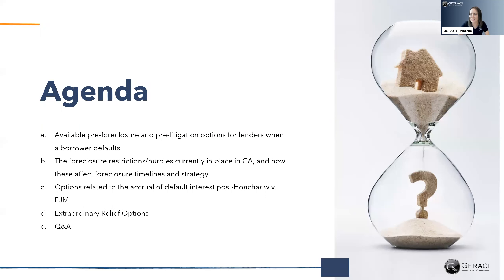To take us to the beginning, we have a helpful agenda. I'll be talking about available pre-foreclosure and pre-litigation options for lenders whenever you have a loan that's defaulted, and about California foreclosure restrictions and hurdles that might affect your strategy. Then Nima will talk about options related to the accrual of default interest post-Hanshiru v. FJM, a case that kind of changed the landscape in California with regards to default interest. And Steve will talk about some extraordinary relief options. Then we'll open it up with Q&A.